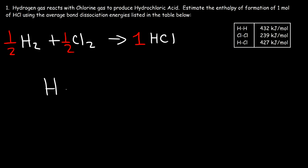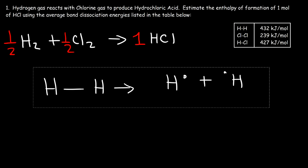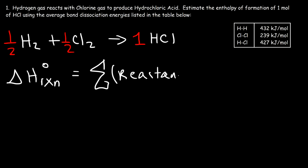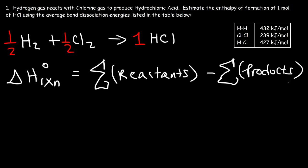What you need to understand is that it takes energy to break a bond. If you want to separate the hydrogen atoms within a molecule you need to put in energy, so breaking a bond is an endothermic process — energy is absorbed. Likewise, any time a bond is formed it's an exothermic process — energy is released. To estimate the enthalpy of the reaction, it's the sum of all the bond energies of the reactants (positive, because breaking bonds is endothermic) minus the sum of all the bond energies of the products (negative, because forming bonds releases energy).